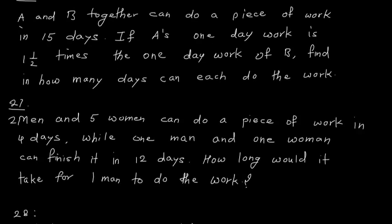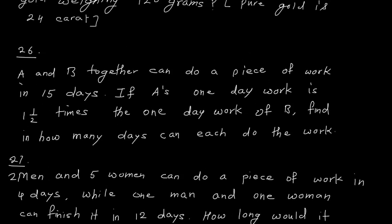Now let us see problem number 26. A and B together can do a piece of work in 15 days. If A's one-day work is one and a half times the one-day work of B, find in how many days can each do the work?